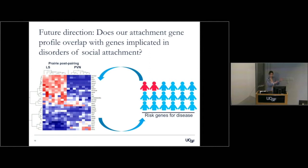So I've shown how we go from a gene signature down to a specific set of genes. But how is this relevant to human disease? Does anything in our gene attachment profile overlap with genes implicated in disorders of social attachment? A lot of these diseases, like autism and FTD, are very heritable and have associated risk genes.